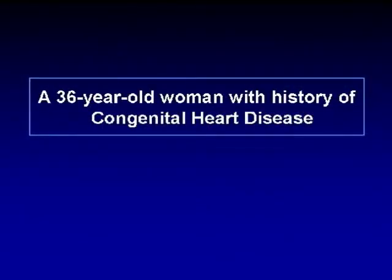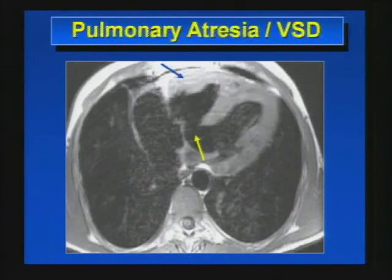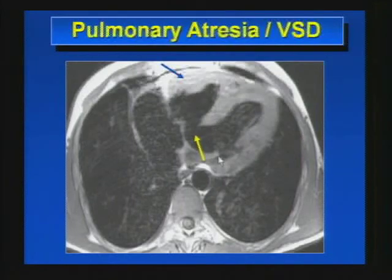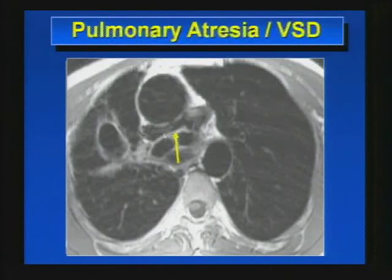Next case: 36-year-old with congenital heart disease. We have four axial images of a black blood cardiac MRI. This is a pulmonary atresia with VSD — the more severe form of tetralogy of Fallot. We see a perimembranous VSD, right ventricular hypertrophy, and the ascending aorta overriding the defect — an overriding aorta. The main pulmonary artery is not seen on one slide; on the next, we see a very small main pulmonary artery with very small branch pulmonary arteries, consistent with pulmonary atresia as opposed to the subpulmonic stenosis usually seen with tetralogy of Fallot.